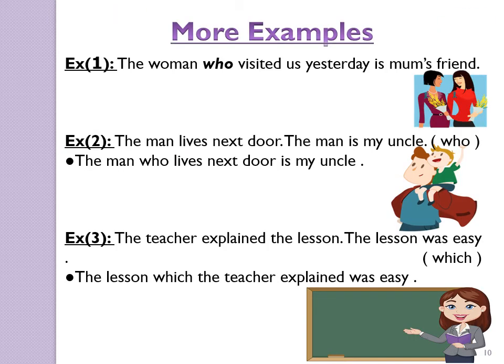Look at more examples. The relative clause starts with the relative pronoun 'who'. A clause is a part of a sentence which doesn't make sense on its own because it doesn't contain the main verb; the main verb comes just after the relative clause. Example one: The woman who visited us yesterday is mom's friend. The relative clause starts with 'who', and the main verb is in 'is mom's friend'.